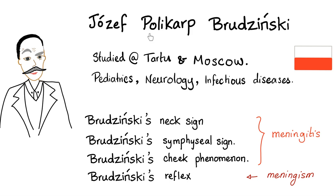Let me tell you what Polikarp means. 'Poli' means many, 'karp' means fruit — so he's incredibly fruitful. And fruitful he was. He discovered Brzezinski's neck sign, which we'll talk about today.